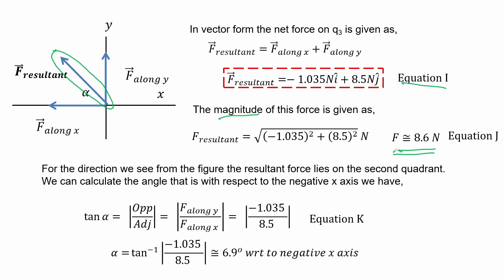For the direction, we take the negative X axis as the reference and using the tangent function where we take its absolute value, we get that the resultant force is 6.9 degrees with respect to the negative X axis.